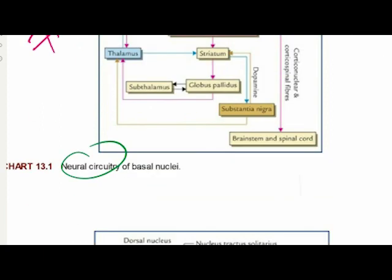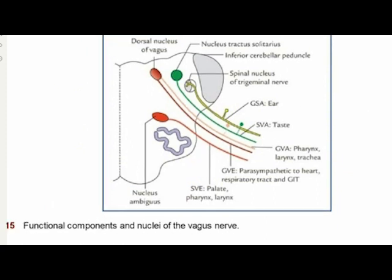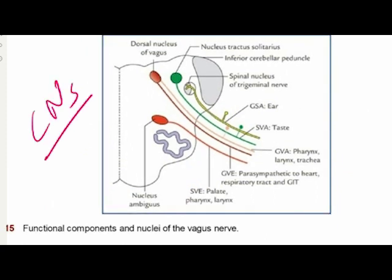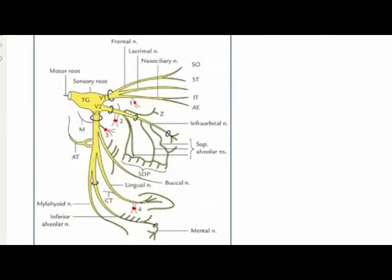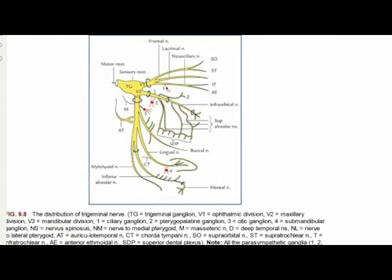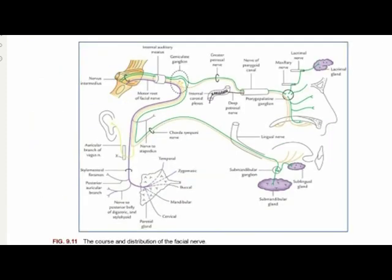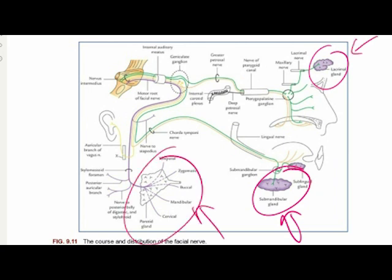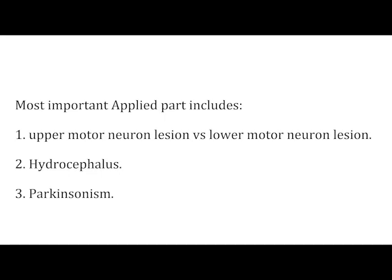Finally, cranial nerves are important: their functional components, as seen for the vagus nerve, and their course and distribution, as shown for the trigeminal nerve and facial nerve. Learning both ways — the organs supplied and how the neural supply is distributed — is helpful. You need to remember this for the major nerves only, and it will also help in gross anatomy overall.